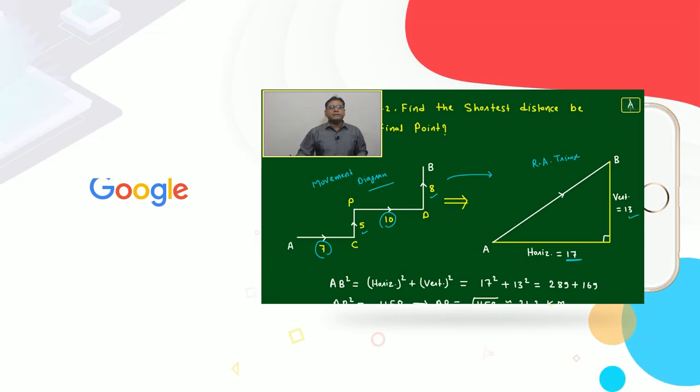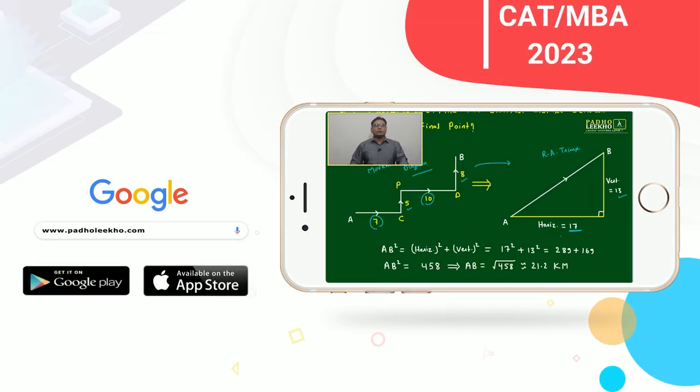Now it will be easy. AB square equals horizontal movement, total horizontal movement 17 square, total vertical movement, this we can put, it will come around 21.2 km.